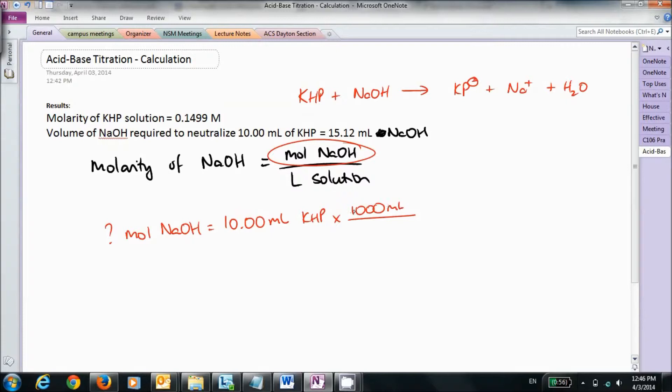One liter is 1,000 milliliters. Cancel this out. I have liters. And then I know that in every liter of the solution, I have 0.1499 moles of KHP.